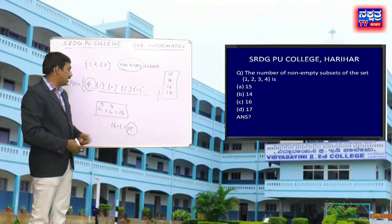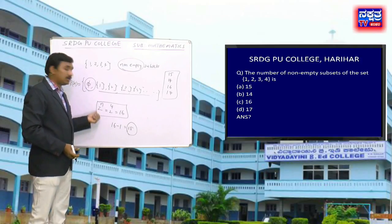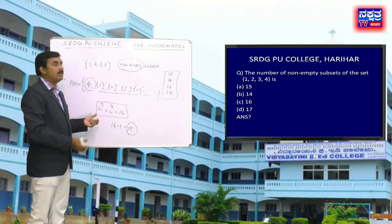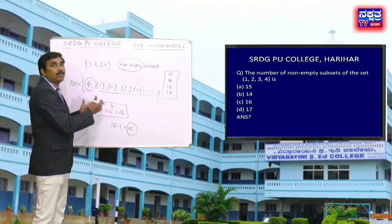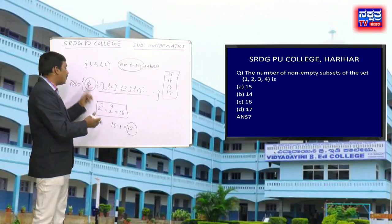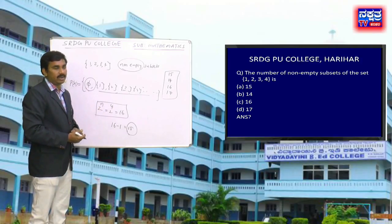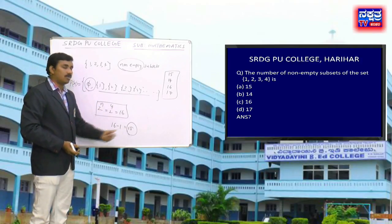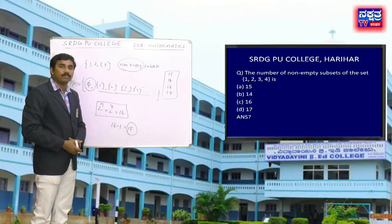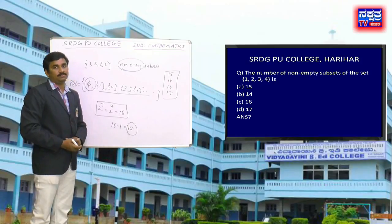We can write this directly as: number of non-empty subsets = (total subsets) minus 1. So the number of non-empty subsets is 15.